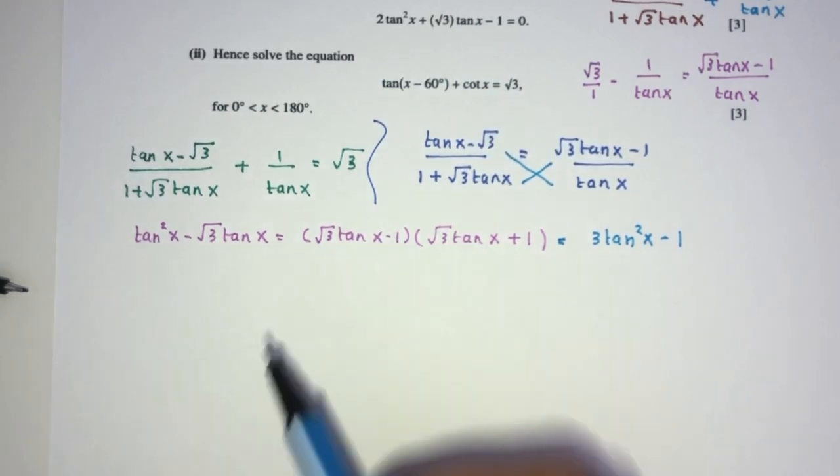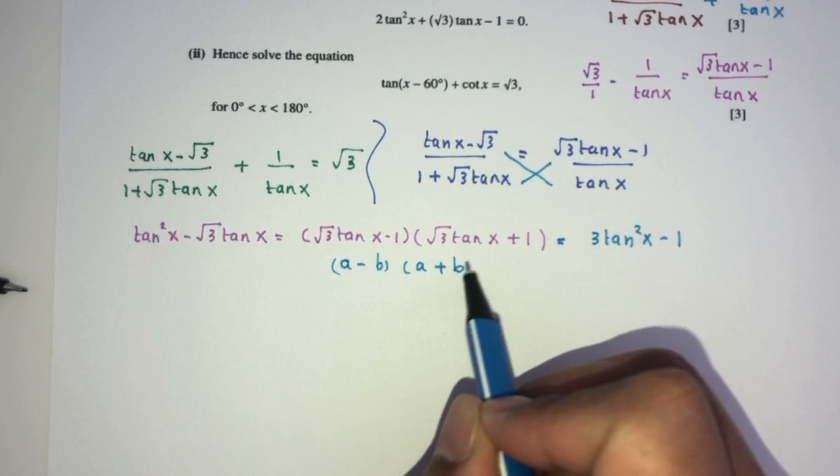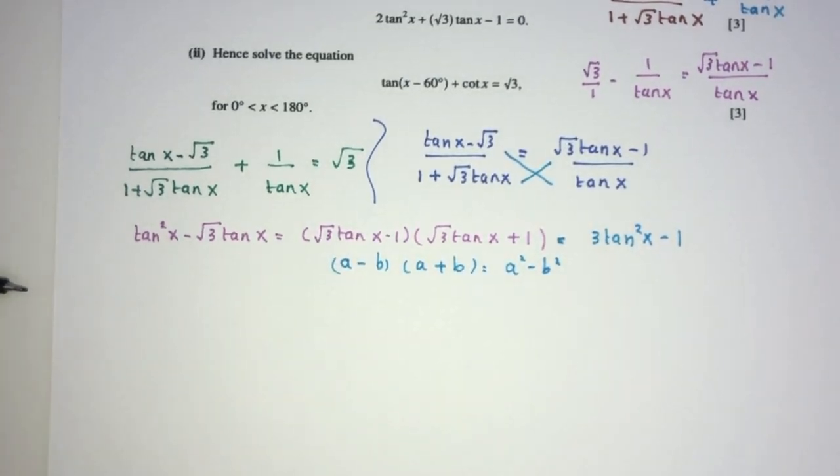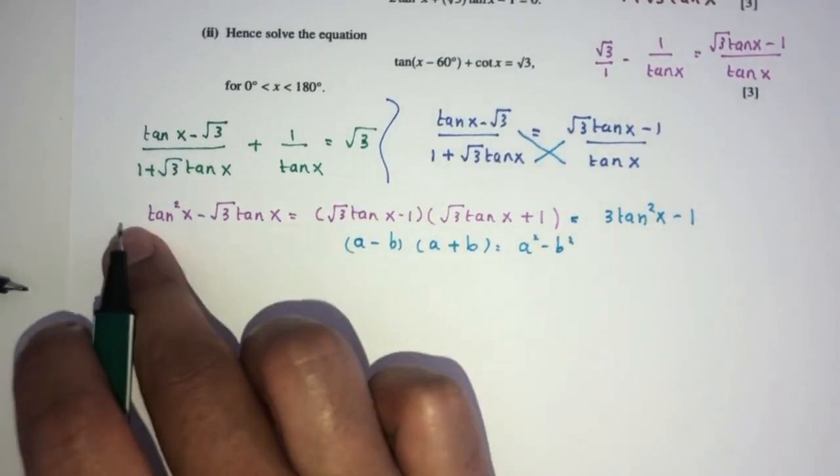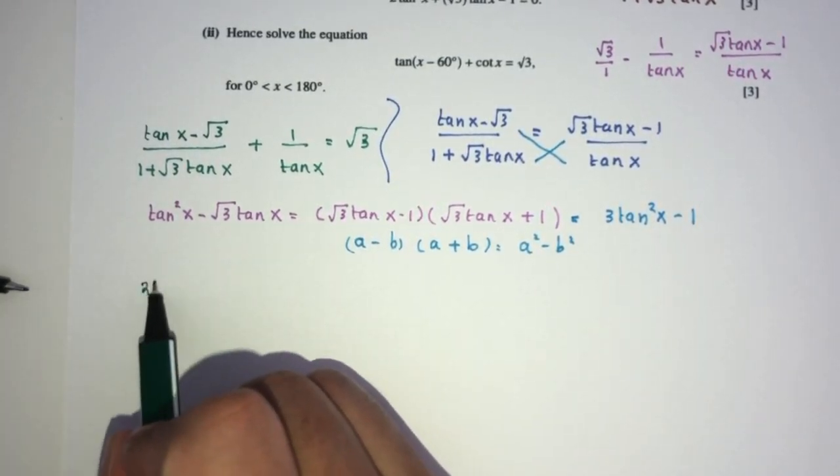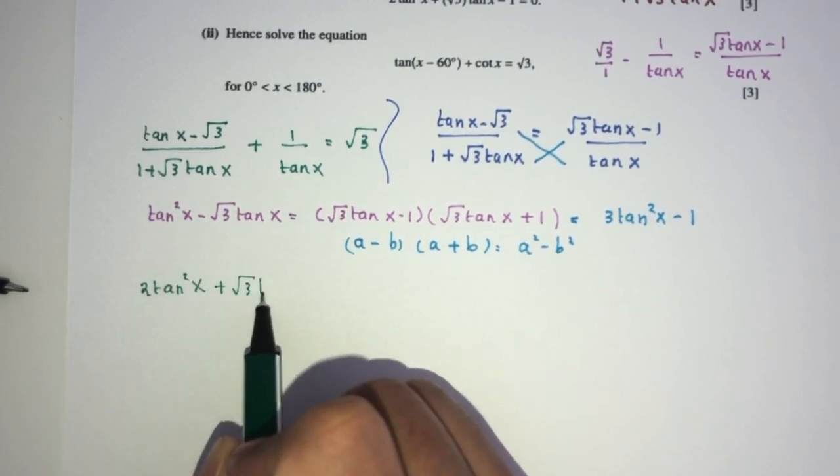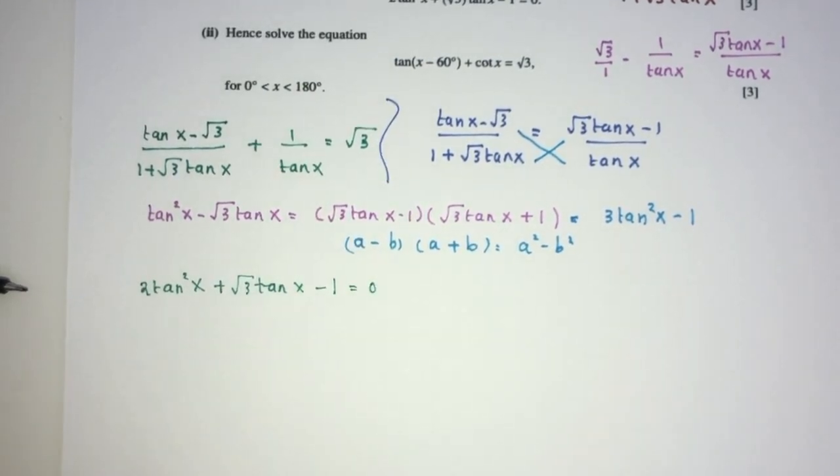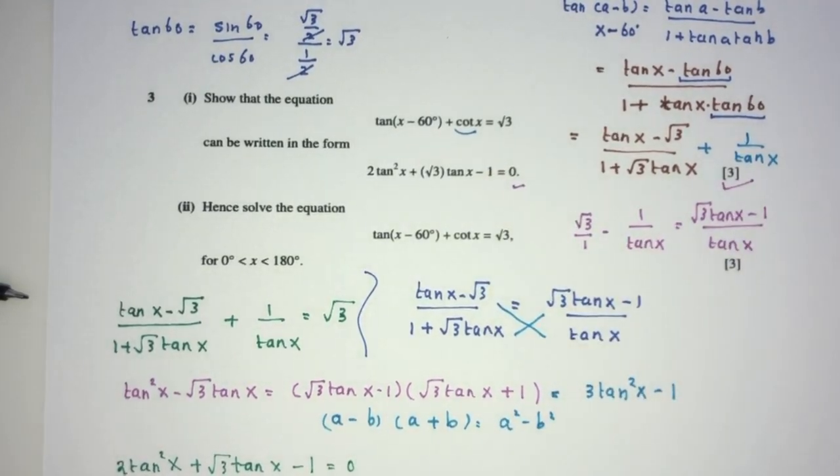Makes sense, according to the formula we know, which is a minus b times a plus b, that should be a square minus b square. Now send everything to one side, this one over here, the 3 minus 1, that should be 2 times tan squared x, plus root 3 times x, and then minus 1, that should be 0. So this is shown as required for part 1, for 3 marks. Good to go.